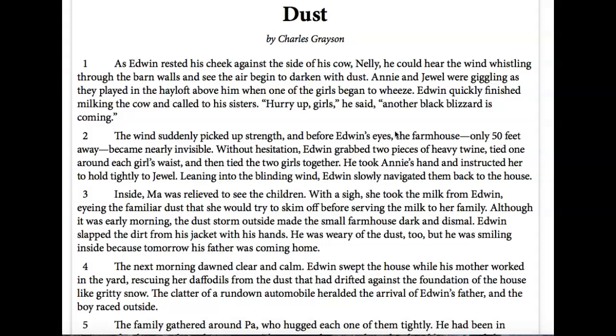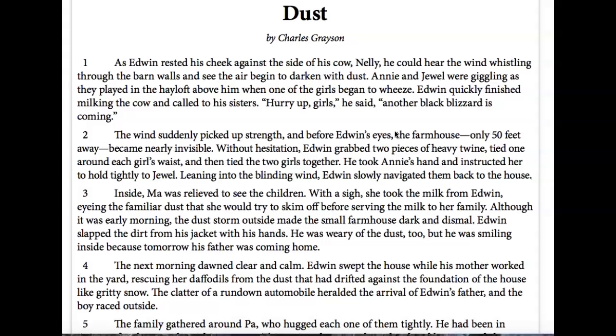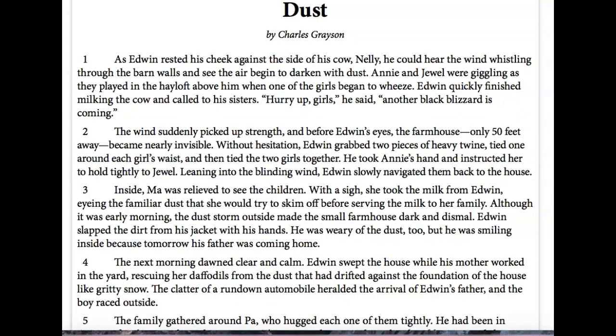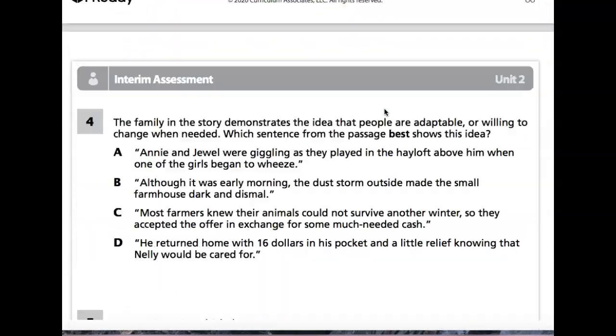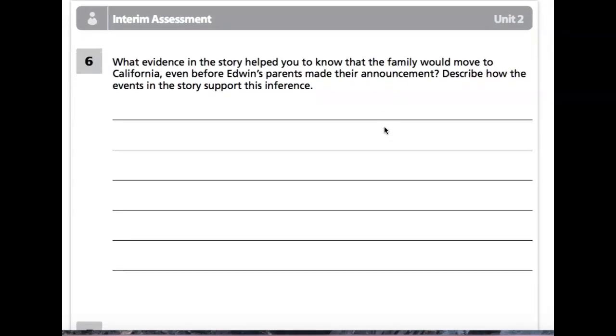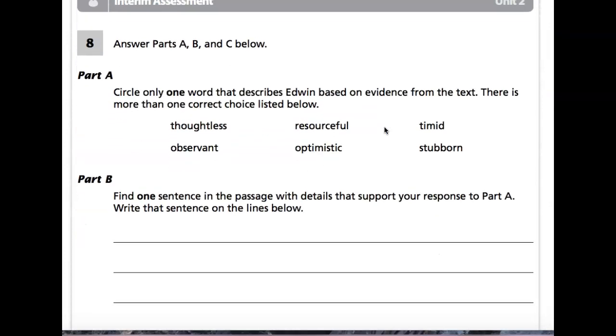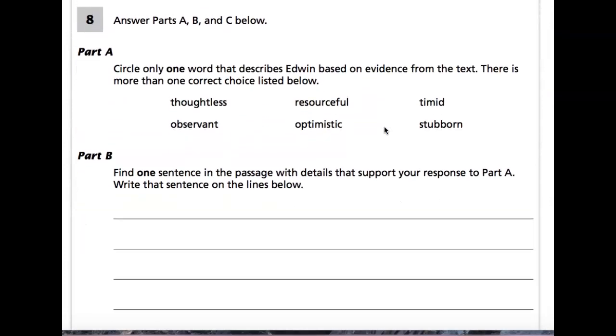All right, so let's move up to the questions again. We did six and seven. It says circle one word that describes Edwin based on evidence from the text. There is more than one correct choice listed below. All right, so we have to think about his character and what kind of character you think that Edwin had.